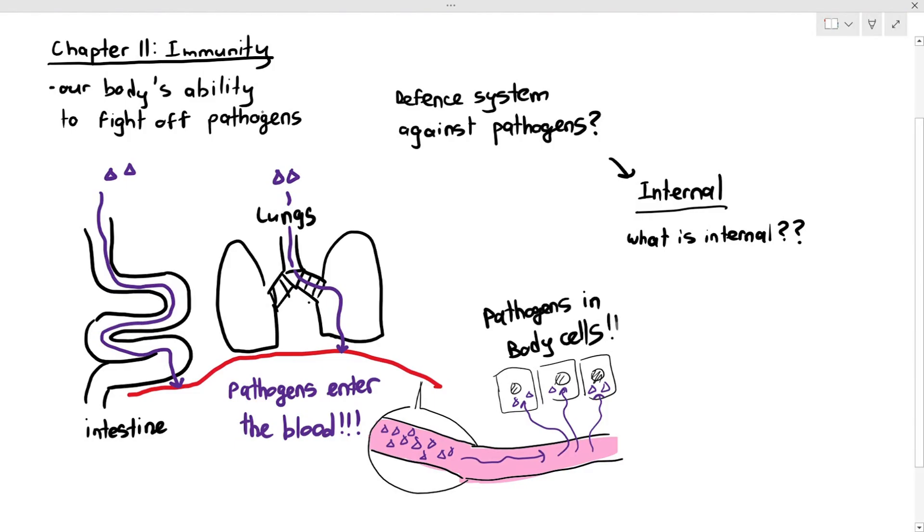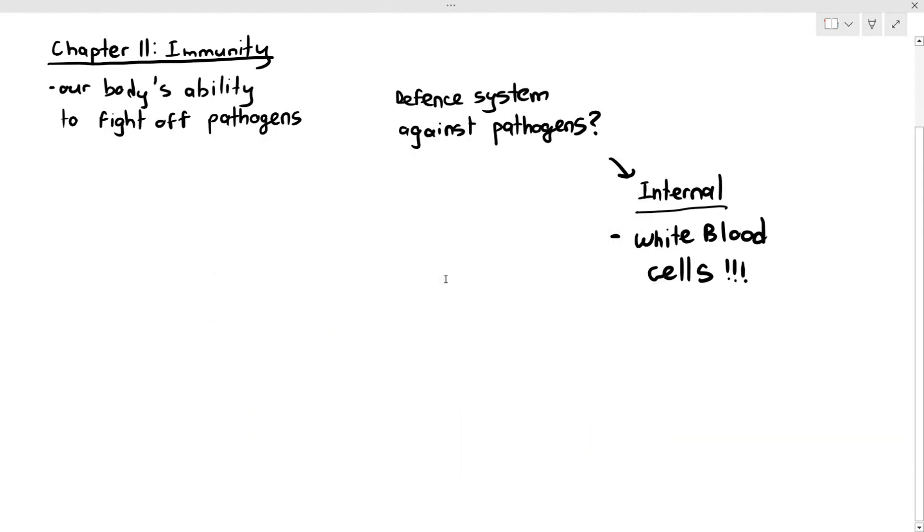So when the pathogens are in your blood or in your body cells, how then do we actually deal with these infections? That is when we need to use the immune system. And the immune system is basically your white blood cells. So your white blood cells are part of your immune system. I want you to understand something important. The immune system is an extremely complicated system. Very, very, very complicated.